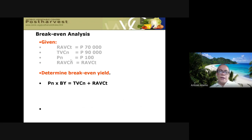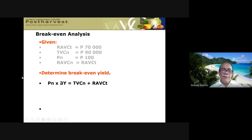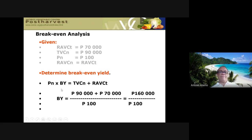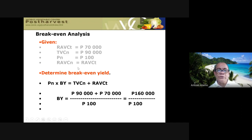The peso units cancel out in the formula — TVC and RAVC are in pesos, and Pn is pesos per kilogram — so the result is in physical units of kilograms. The break-even yield is 1,600 kilograms.